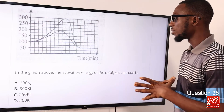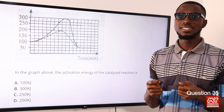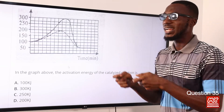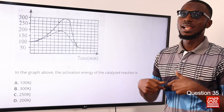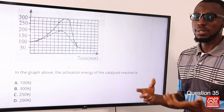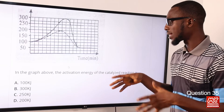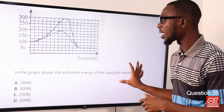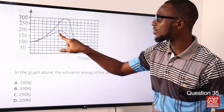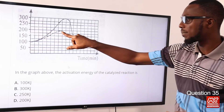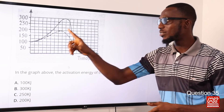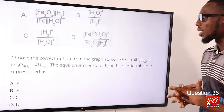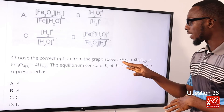Question 35: From the graph above, the activation energy of the catalyzed reaction is what? The presence of a catalyst affects the rate of reaction. A positive catalyst lowers the activation energy so that more reactants can become products. From the graph, the activation energy of the catalyzed reaction is found at the level of 200 kilojoules. The correct option is option D.